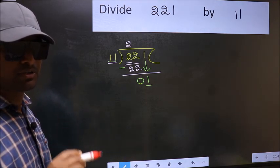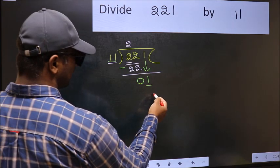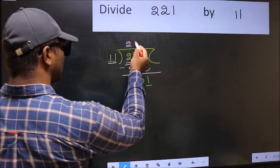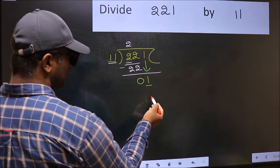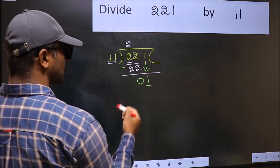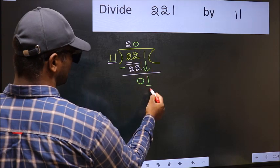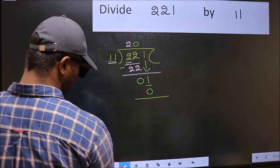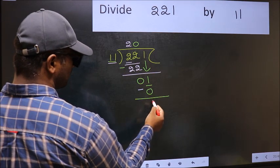Instead, what you should think of doing is, which number should we take here. If I take 1, we will get 11. But 11 is larger than 1. So, what we should do is, we should take 0. So, 11 into 0, 0. Now, you should subtract. 1 minus 0, 1.